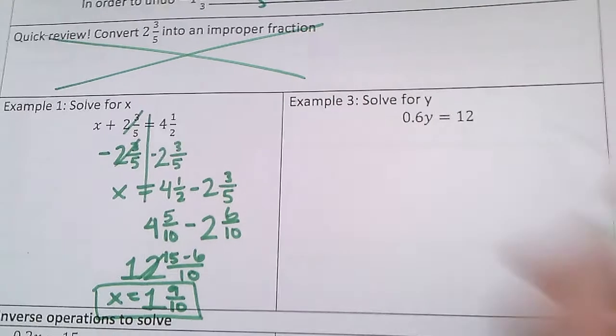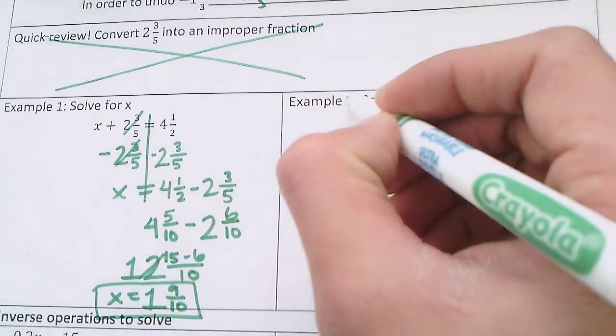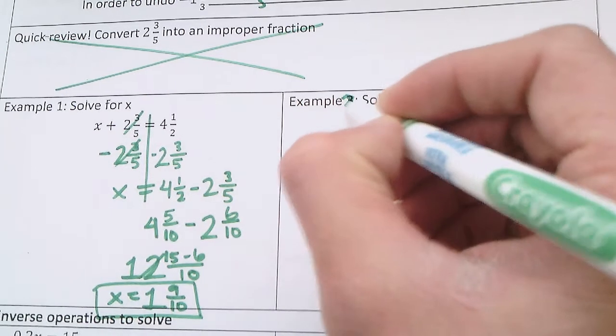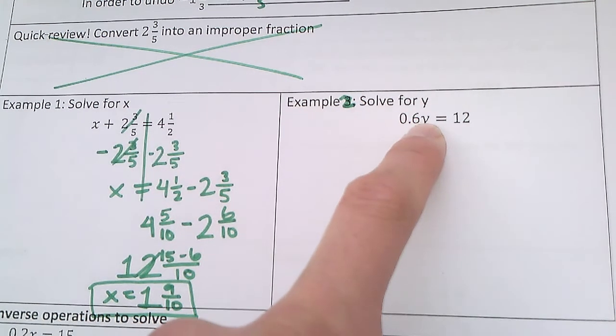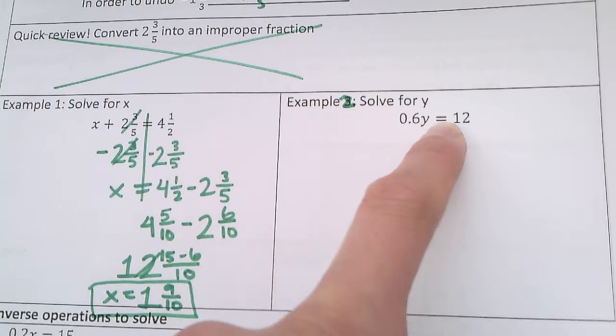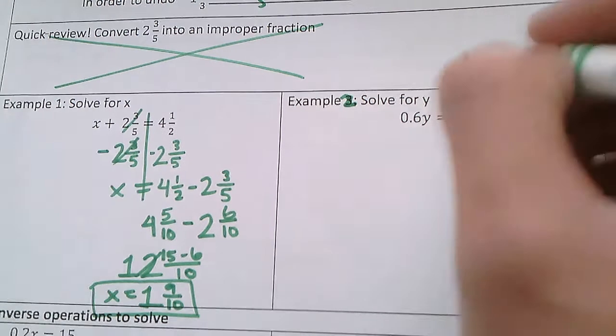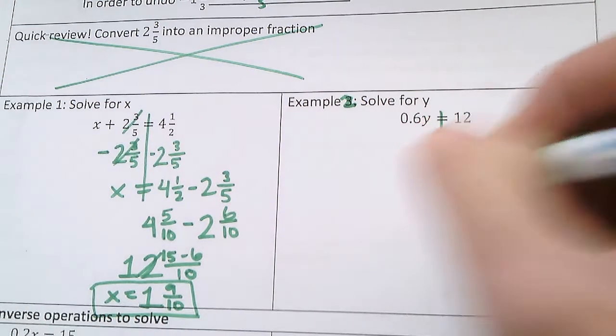Let's look at example number 2, not number 3. Solve for y. 0.6 times y equals 12. I'll draw the line going through the equal sign.